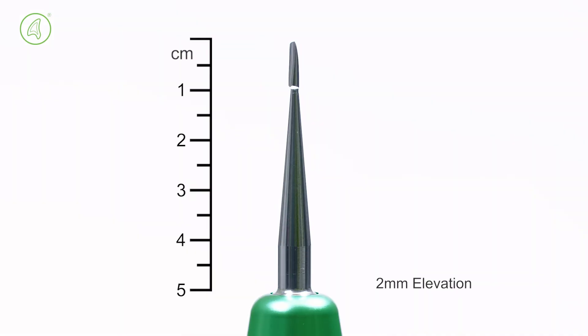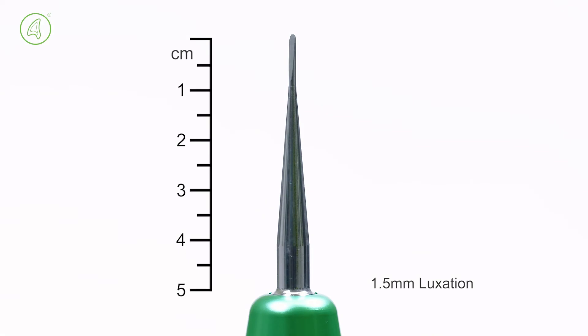Elevation blades from 2 to 5 mm to twist and stretch the periodontal ligament. Luxation blades from 1.5 to 5 mm to gently sever the periodontal ligament.